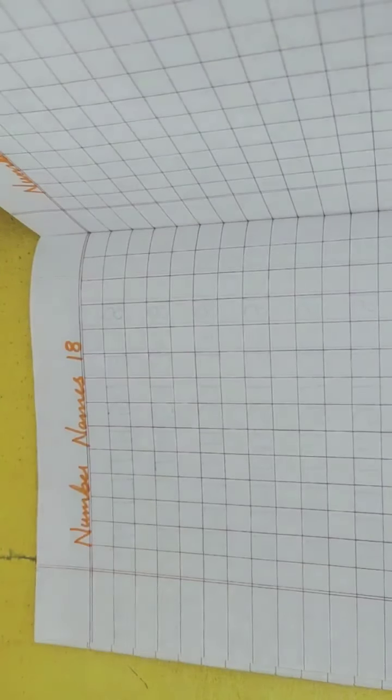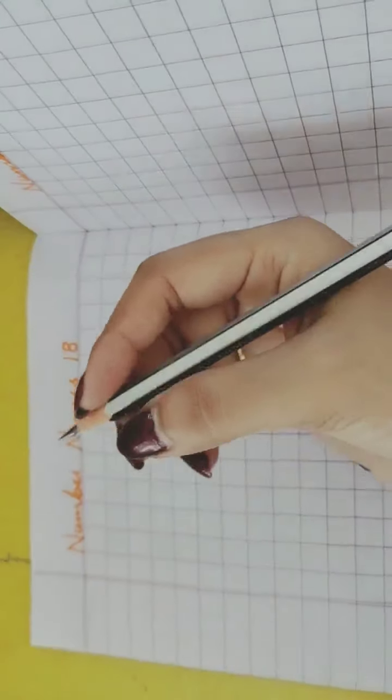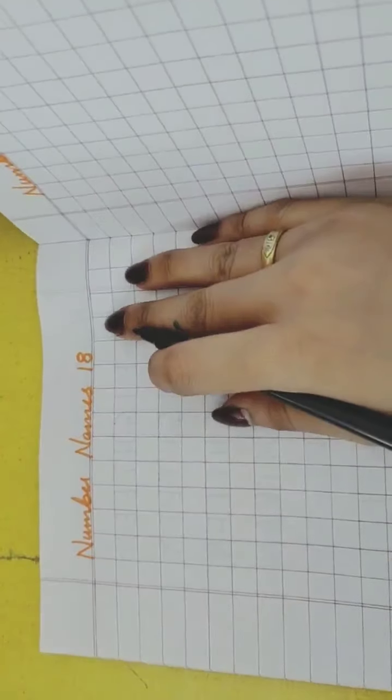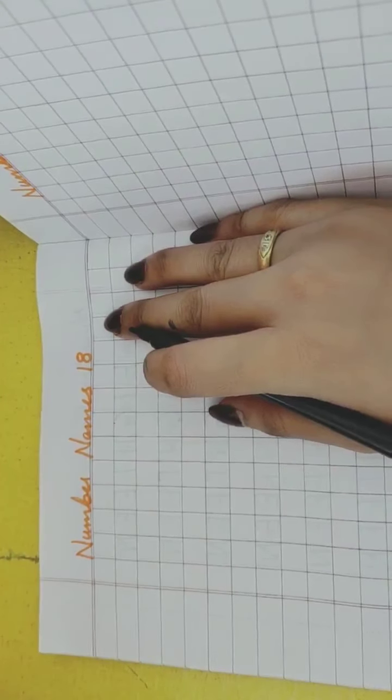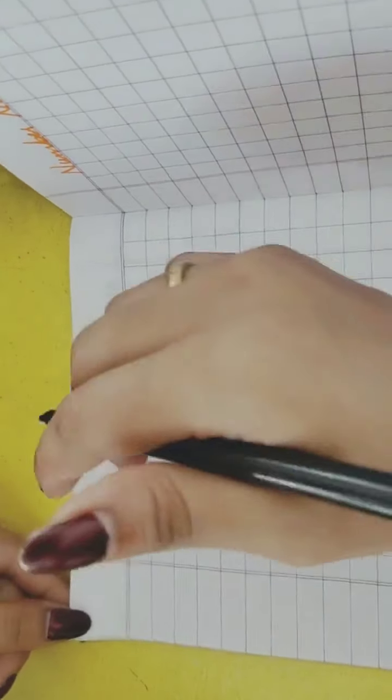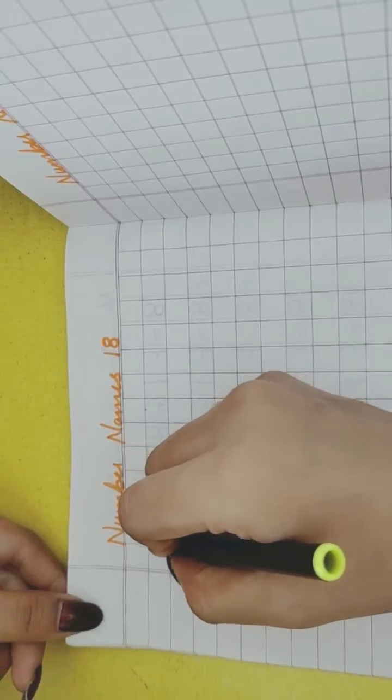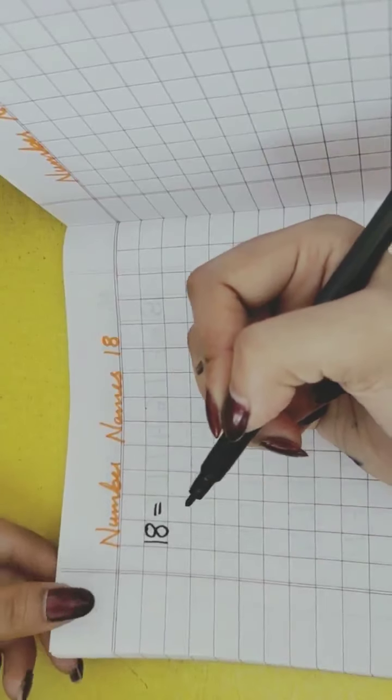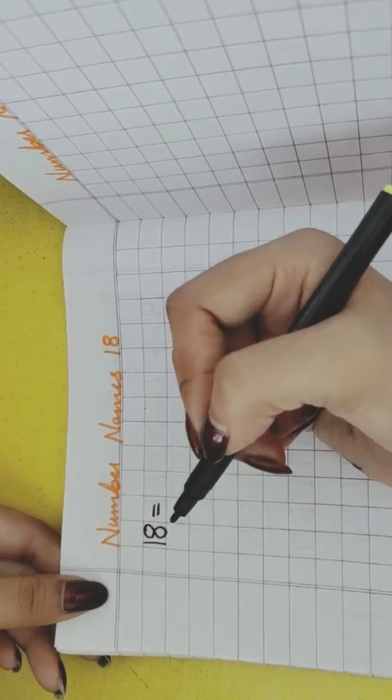So take out your pencil and eraser, now hold your pencil like this. So now I want you to repeat with me. Aapko mere saath repeat karna hai. One, eight. What number is this? One, eight is 18.